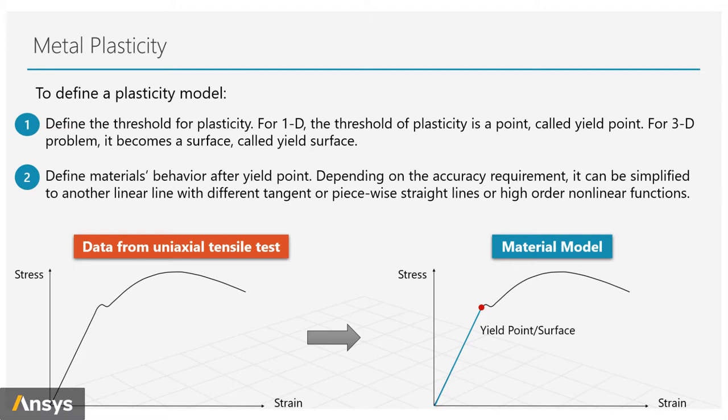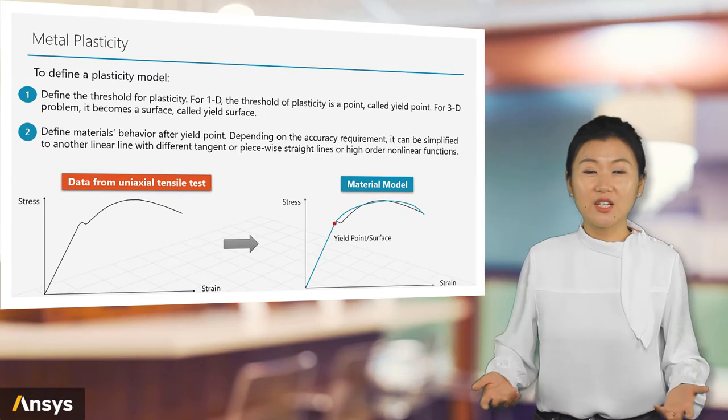Before the yield point, the stress-strain relationship is a straight line with a constant tangent. After the yield point, depending on the requirement of accuracy and efficiency, the material's behavior can be simplified to another linear line with different tangent, or piecewise straight lines, or even high-order nonlinear functions.